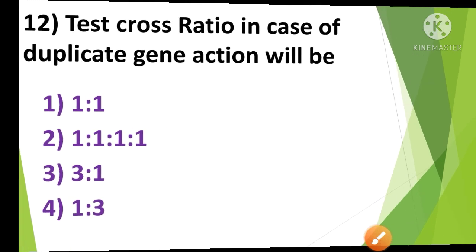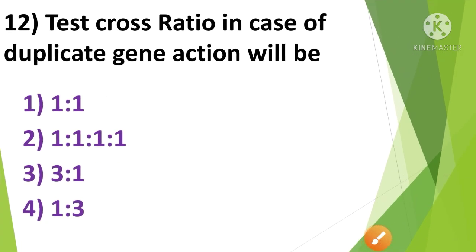Next question: Test cross ratio in case of duplicate gene action will be — 1st option 1:1, 2nd option 1:1:1:1, 3rd option 3:1, and 4th option 1:3. The correct answer is option 3rd — 3:1. The test cross ratio in case of duplicate gene action will be 3:1.